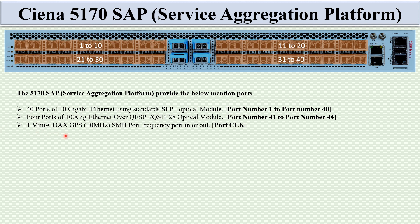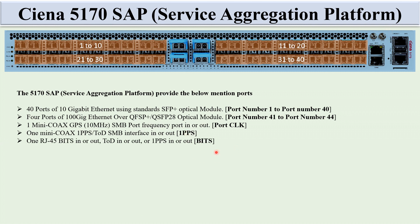There is one mini-coax GPS 10 MHz SMB port for frequency input/output — this is the clock port. There is also one mini-coax 1PPS to D SMB interface for 1PPS synchronization. One RJ45 BITS in/out, ToD in/out, or 1PPS in/out — this is the BITS port. One RJ45 sync port.